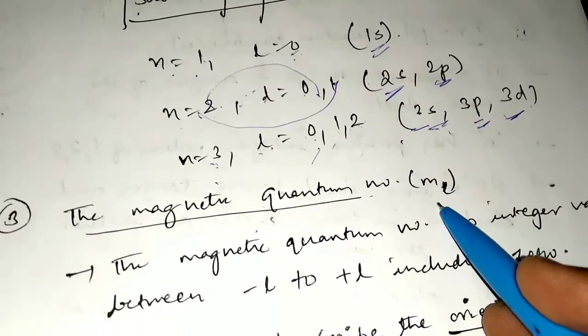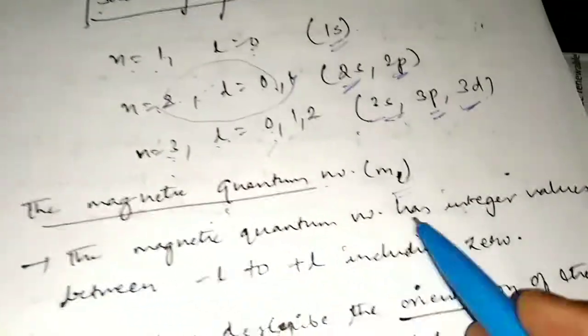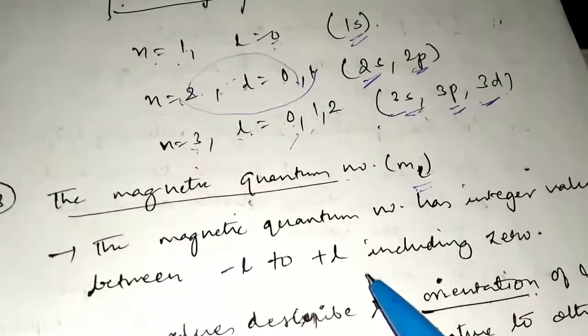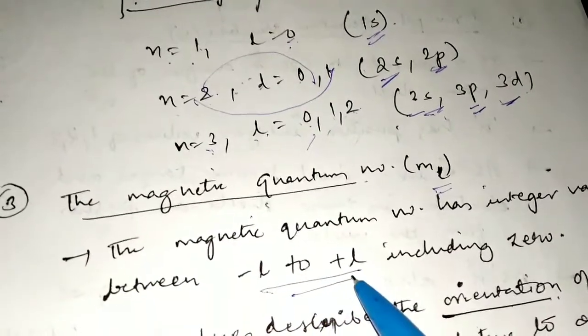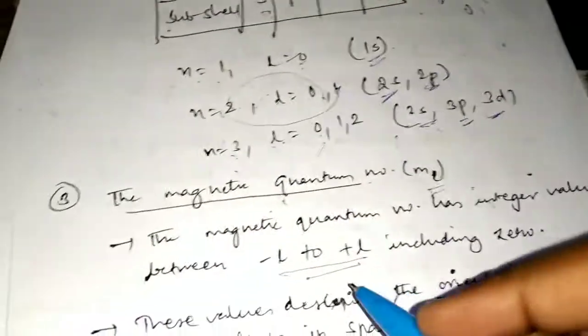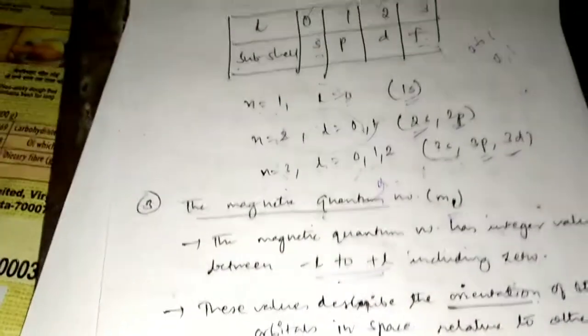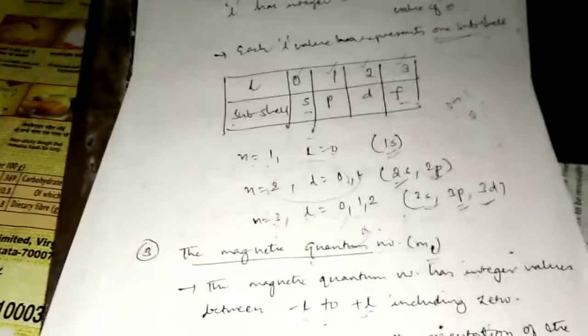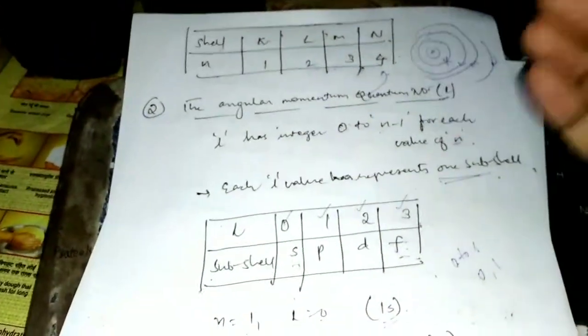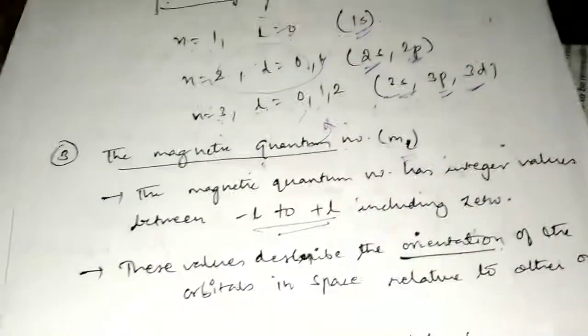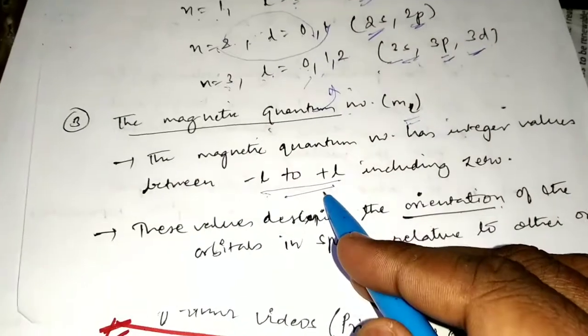The third quantum number is the magnetic quantum number, represented by ML. The magnetic quantum number has integer values between minus L and plus L. So ML depends on L, and L depends on N. There may be exam questions about how quantum numbers are dependent on each other — you need to explain the principal quantum number N, the angular quantum number L, and then the magnetic quantum number ML.